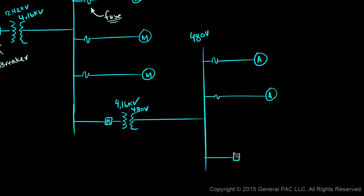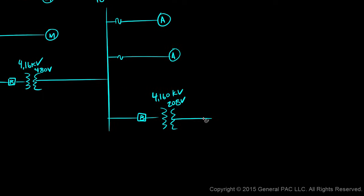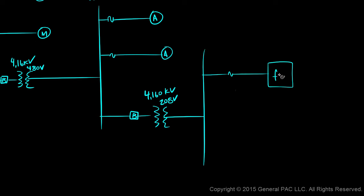And then suppose we had another step-down transformer that was protected by a breaker that steps the voltage down from 4.16 kV to 2.08 kV, and here we're feeding all the outlets of our facility.